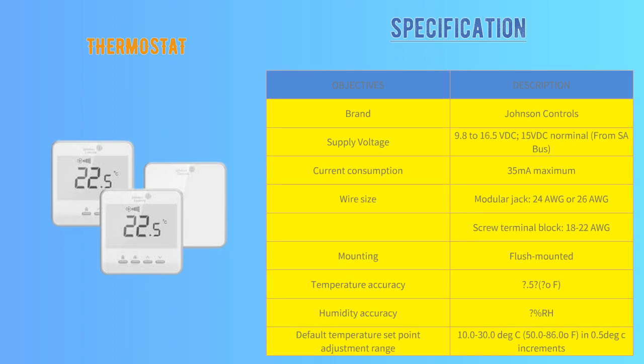Seventh, room thermostat. This is a product of Johnson Controls. It senses the room temperature and humidity. You can change the set point, and as per the set point, it gives a signal to the FCU, VAV, or AHU.